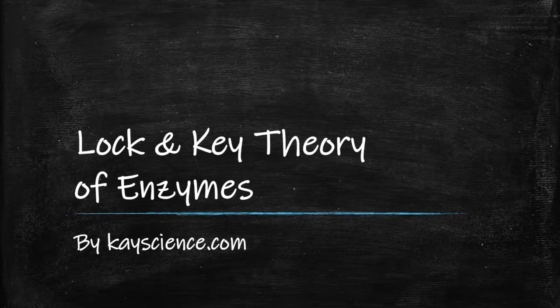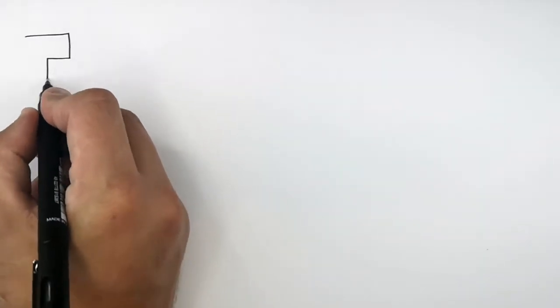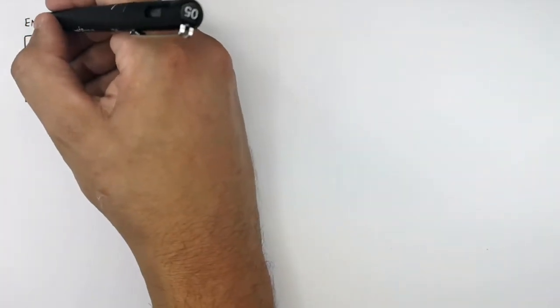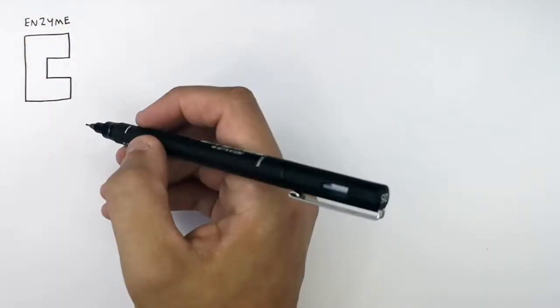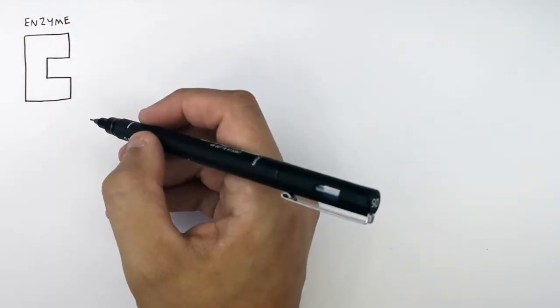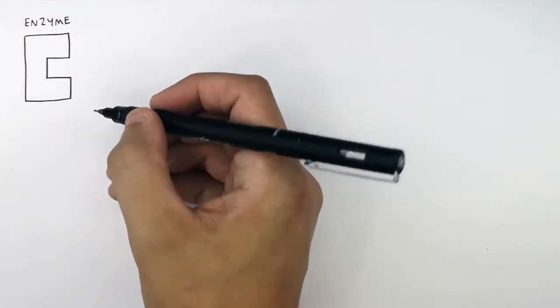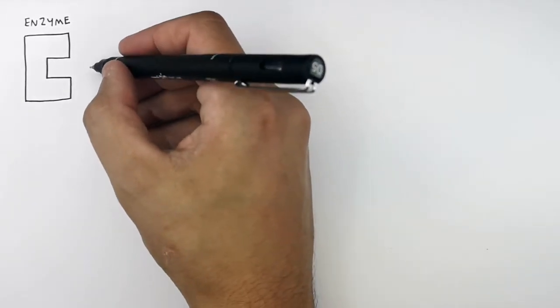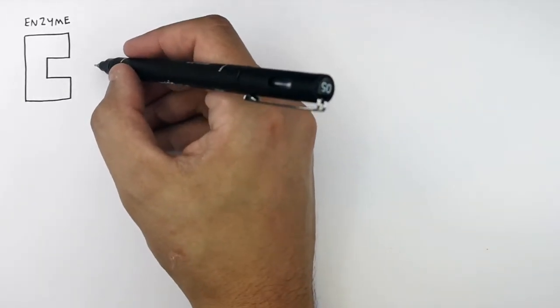Lock and Key Theory of Enzymes by kscience.com. This here is the enzyme. Enzymes are biological catalysts — they speed up the rate of reactions in your body.